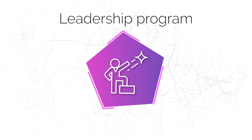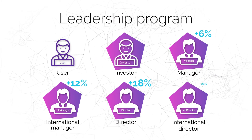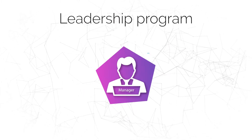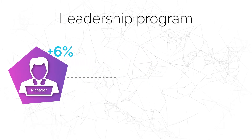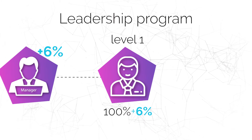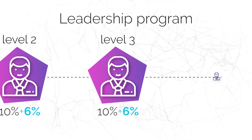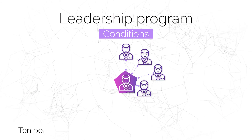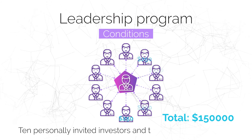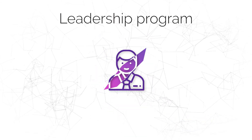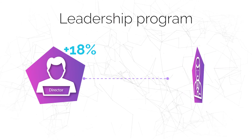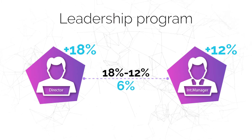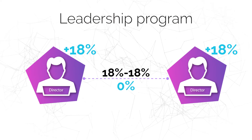Leadership Program: the company has six rankings, and your leadership bonuses increase with your ranking. When you reach the manager rank, you start receiving an additional 6% of the income of your partners — 100% plus 6% from the second to the tenth level, and 10% plus 6% from the 11th level onwards. Conditions for the 6%: 10 personally invited investors and team turnover of $150,000. If you have the rank of director and a partner in your structure has the rank of international manager, you get the difference between your and their bonuses, which is 6%. If you and your partner have the same rank, you do not get a bonus.